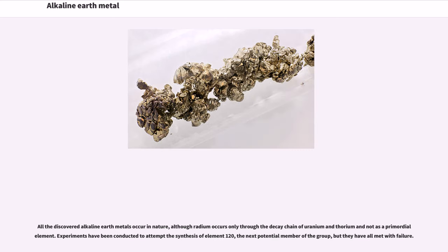All the discovered alkaline earth metals occur in nature, although radium occurs only through the decay chain of uranium and thorium and not as a primordial element. Experiments have been conducted to attempt the synthesis of element 120, the next potential member of the group, but they have all met with failure.